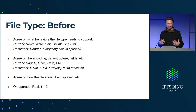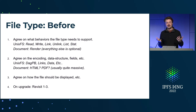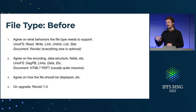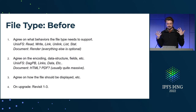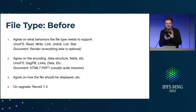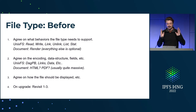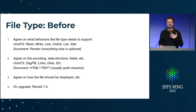Another example I like to give is file types. In the current world, we have to agree on behaviors: read, write, link, stat, all this kind of stuff. For documents, I need to agree on the fact that we need to be able to render these documents. For virtual worlds, we need to agree on rendering 3D objects and interacting with them. Then we have to agree on all the details: how do we encode it, what are the semantics? HTML is a massive spec. PDF — I don't want to talk about it. We have to agree on how things are supposed to be displayed, and no implementation will actually agree, so everyone will get different outcomes.